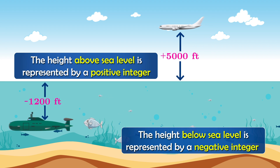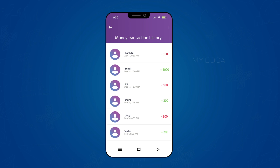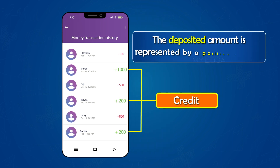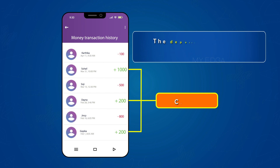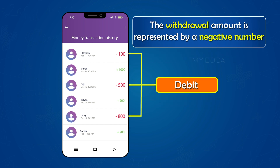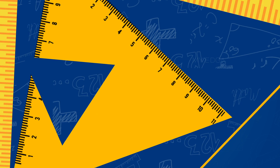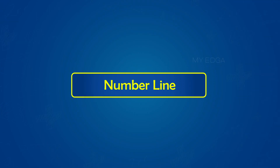Money deposited in a bank is a credit and is represented by a positive number, whereas the withdrawal amount is a debit and is represented by a negative number. That's all for today; in the upcoming videos we will learn the basics of the number line.